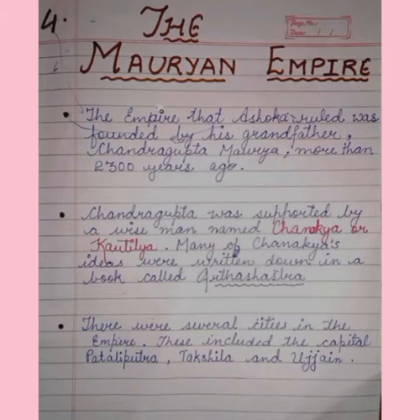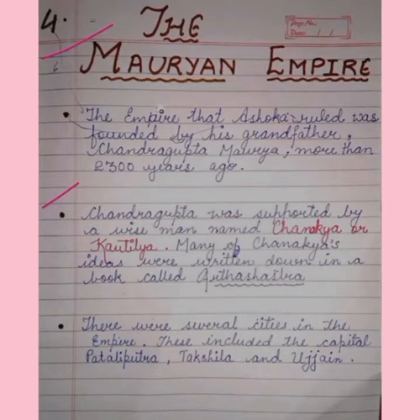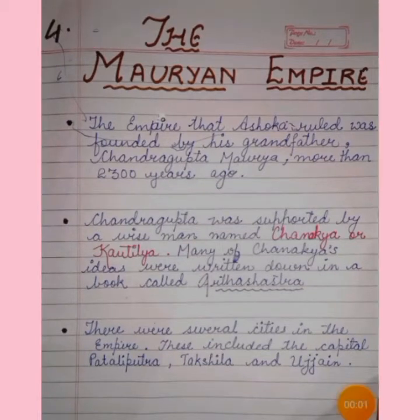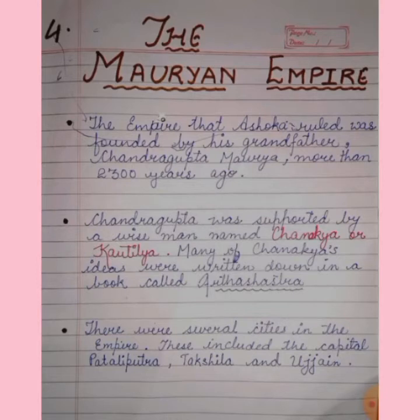Chandragupta Maurya was supported by his advisor known as Chanakya, whose real name was Vishnu Gupta. The kingdom of Magadha was founded by Mahapadmananda. After his death, the kingdom was divided into eight parts by his eight sons, who ruled for 12 years. The sons were cruel, pleasure-loving and oppressive — they imposed heavy taxes on the people, became unpopular, and weakened the kingdom. One of these sons insulted Kautilya, a Brahmin in his court, and on that day Kautilya took a vow that he would bring the downfall of the Nanda dynasty.